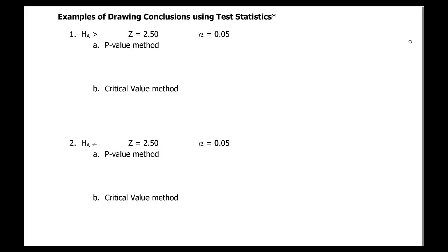Let's look at some examples of drawing conclusions with test statistics. I'm going to show both the p-value method and the critical value method for four different examples — right-tailed, left-tailed, and two-tailed tests — so you should see everything you would encounter in practice problems.